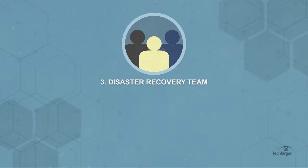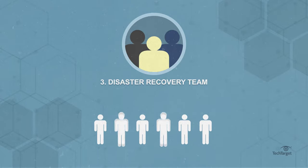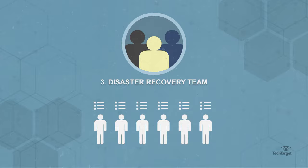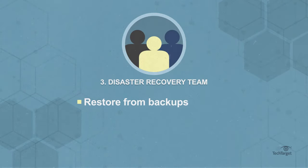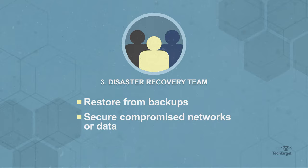Three: disaster recovery team. This section outlines which members of the team should be contacted and ready to act when an incident occurs. The team and individual responsibilities should be clear and concise. This step ensures the personnel are ready to restore from backups, secure compromised networks or data, and facilitate evacuations if needed.